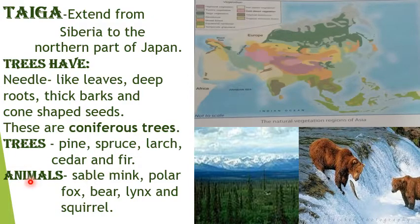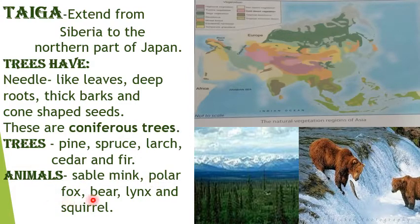Animals like sable, mink, polar fox, bear, lynx and squirrel are found in the Taiga region.